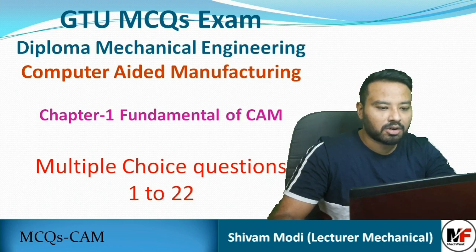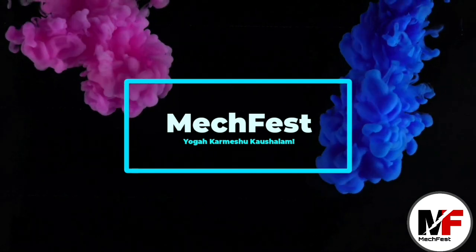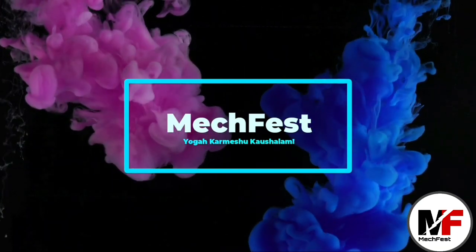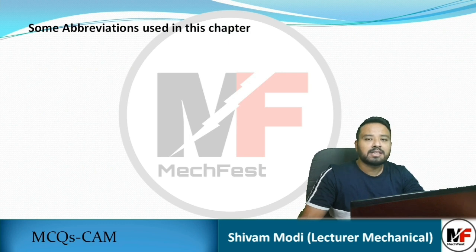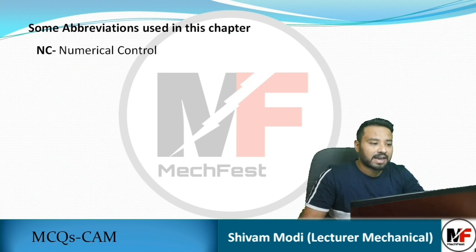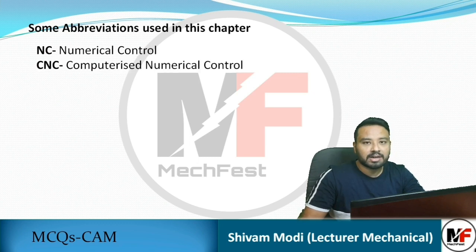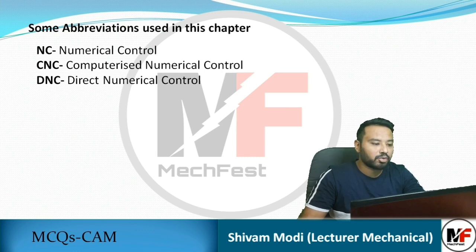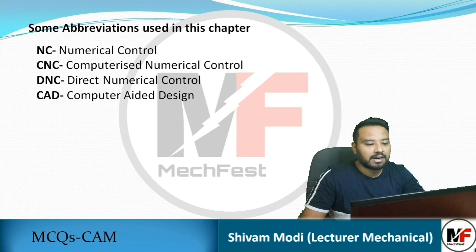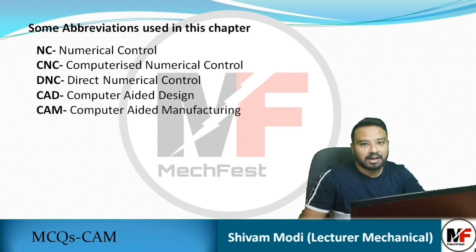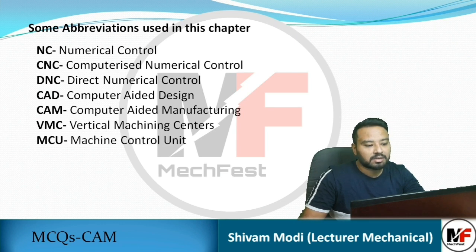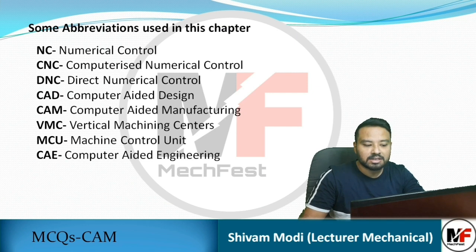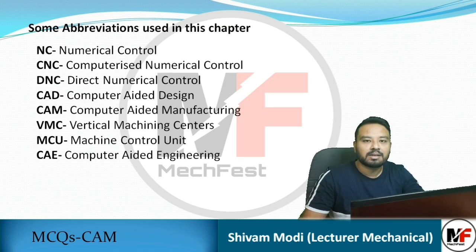Chapter number 1: Fundamentals of CAM. Here are some abbreviations used in this chapter: NC – Numerical Control, CNC – Computerized Numerical Control, DNC – Direct Numerical Control, CAD – Computer Aided Design, CAM – Computer Aided Manufacturing, VMC – Vertical Machining Center, MCU – Machine Control Unit, CAE – Computer Aided Engineering. These are the abbreviations used throughout this chapter and the whole subject.